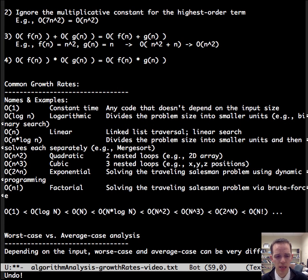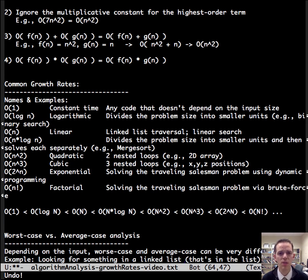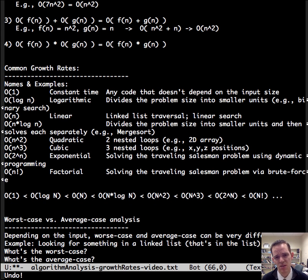Now let's take a moment and talk about worst case versus average case analysis. Depending on the input, worst case and average case can be very different. For example, what if we're looking for something in a linked list? And for now, we'll just assume that the item is in the list. What's the worst case? Worst case would be the item is in the very last position and we have to look through everything to get there. The average case, if an item's in the list is we're going to have to, on average, look through half the list, sometimes one, sometimes all of them, but on average, it's going to be half the list.